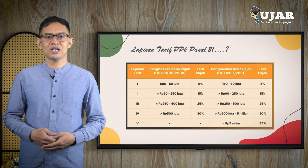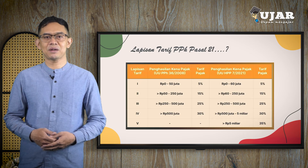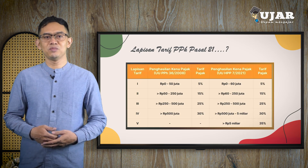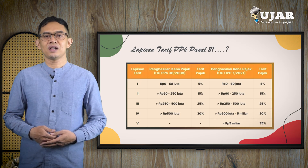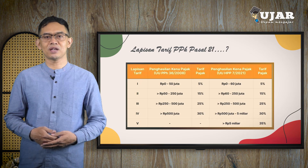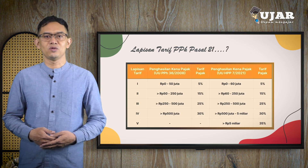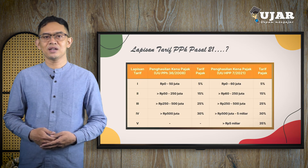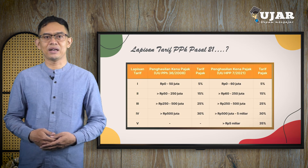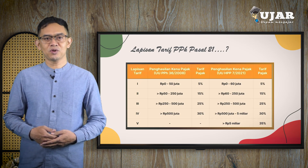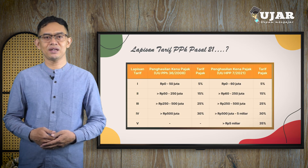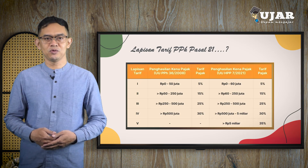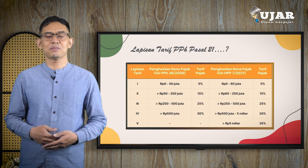Tarif pemotongan pajak penghasilan Pasal 17 ayat 1 huruf A UU PPH menggunakan tarif pajak progresif berdasarkan lapisan penghasilan kena pajak. Untuk diketahui, sebelumnya penghasilan yang dikenakan pajak mulai dari Rp. 50 juta setahun dengan tarif pajak progresif PPH 21 mulai 5% hingga 30% untuk penghasilan kena pajak di atas Rp. 500 juta dalam UU PPH nomor 36 tahun 2008. Lalu dilakukan perubahan lapisan penghasilan kena pajak mulai dari Rp. 60 juta setahun dengan tarif progresif 5% hingga 35% untuk penghasilan kena pajak di atas Rp. 5 miliar melalui UU HPP nomor 7 tahun 2021. Adapun rinciannya bisa lihat di tabel berikut ini.